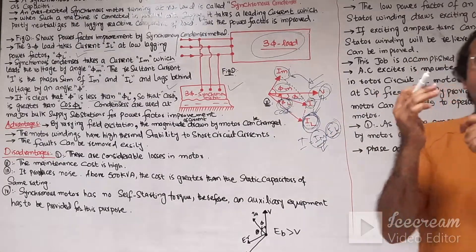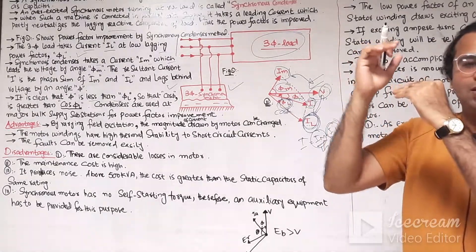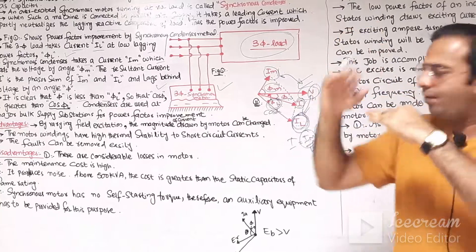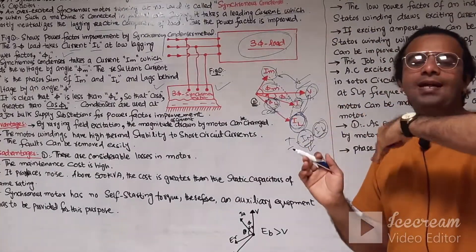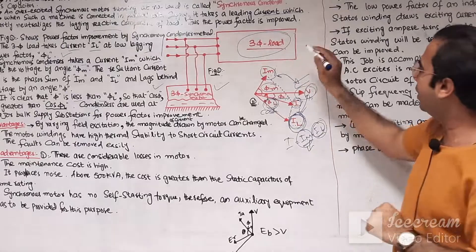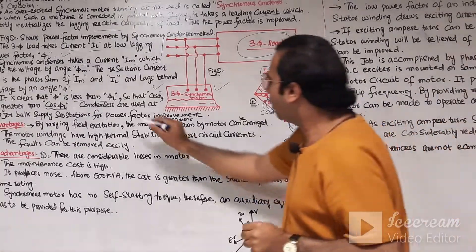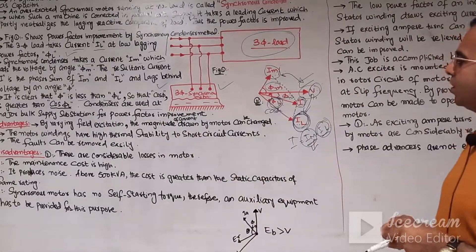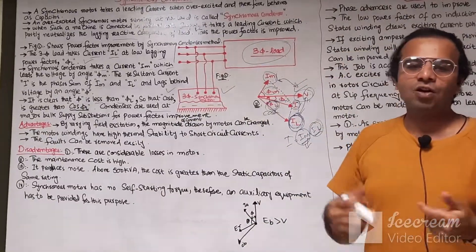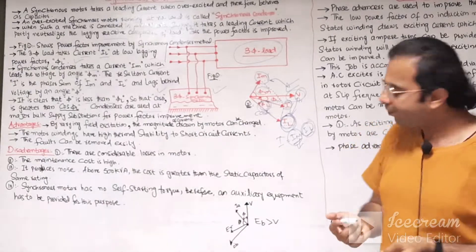Whenever the power factor is improved, the phase angle between the voltage and current is reduced, and hence the power factor of the three-phase load is improved. Synchronous condensers are also used at bulk supply substations for power factor improvement.